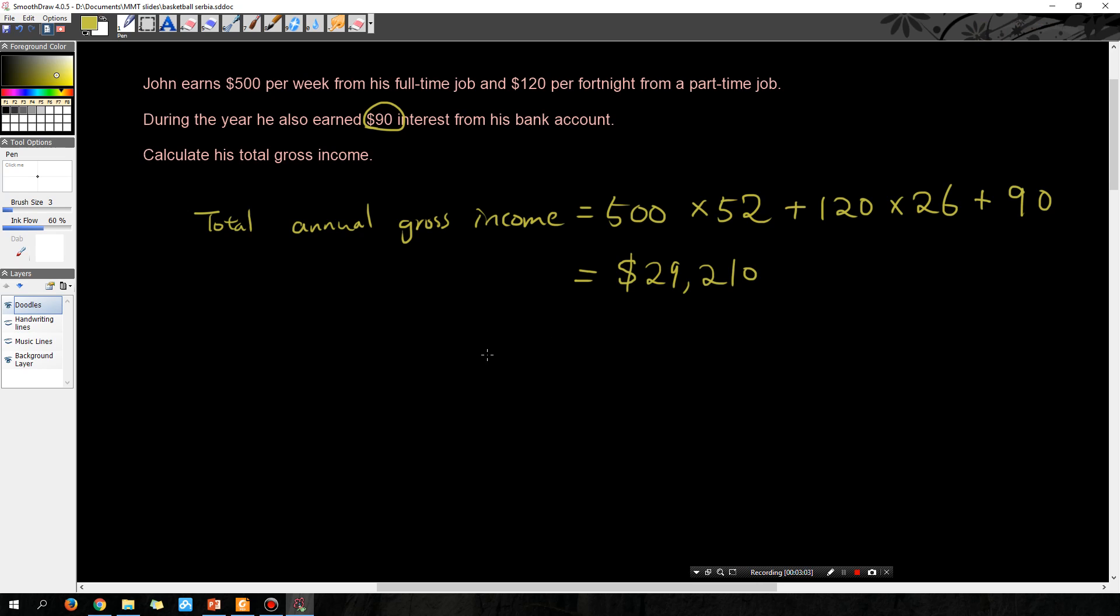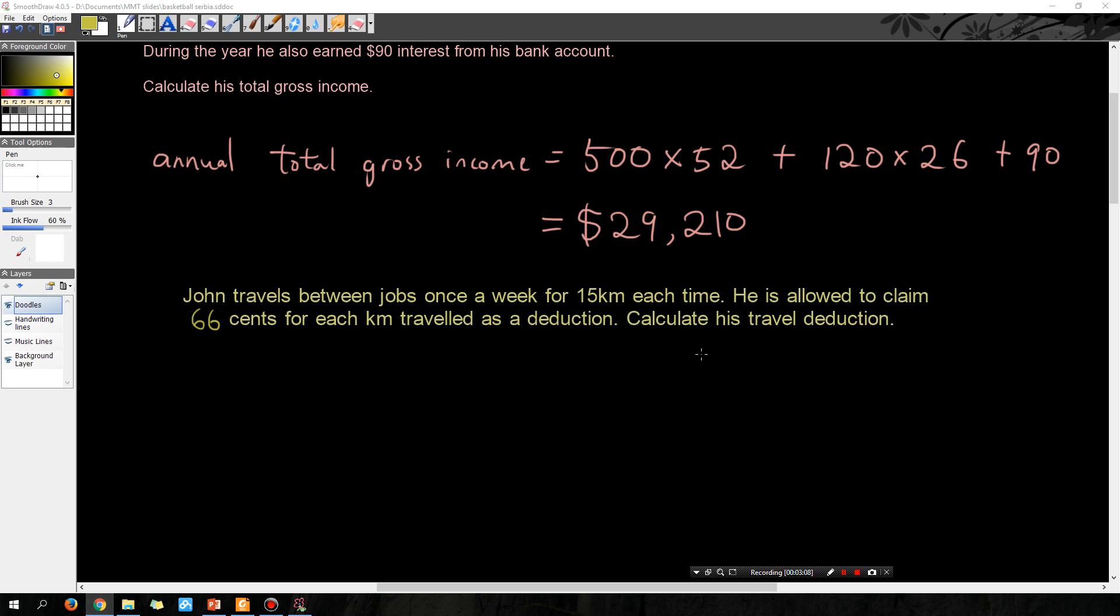Chances are John is going to have some sort of work-related expense which I'm going to list now. John travels between jobs once a week for 15 kilometers each time.